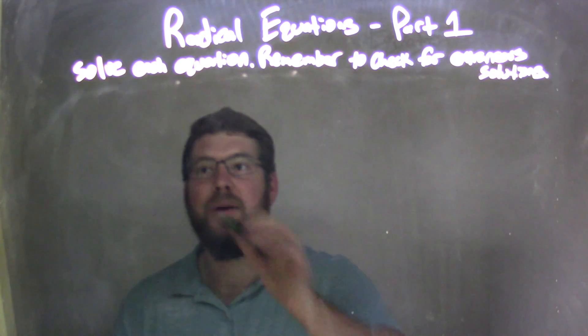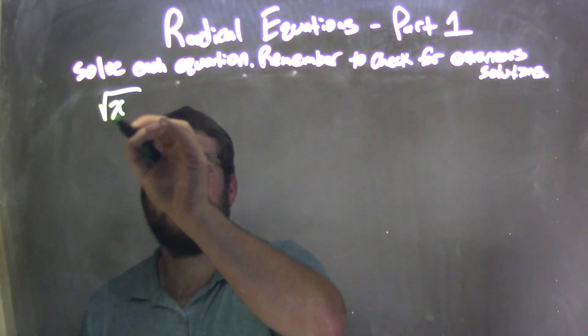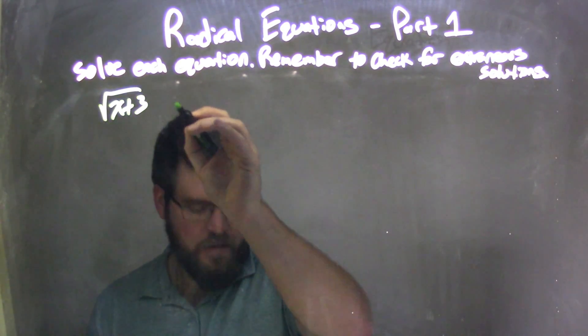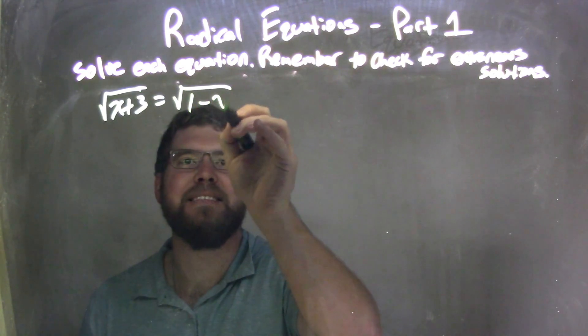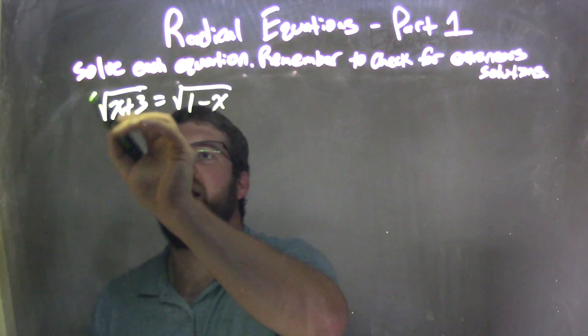So, if I was given this equation, the square root of x plus 3 equals the square root of 1 minus x. First step, I need to square both sides.